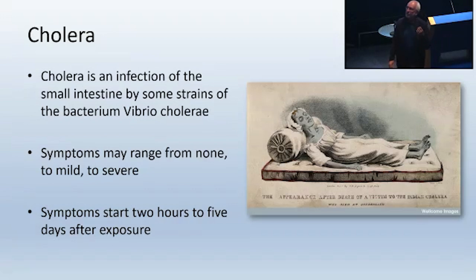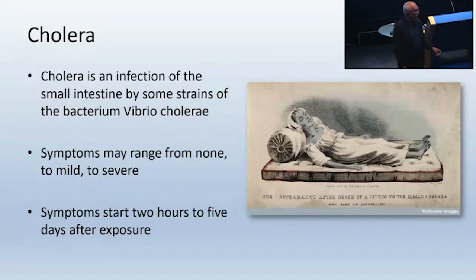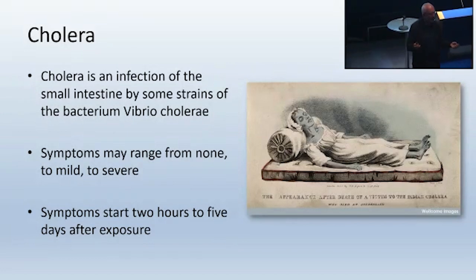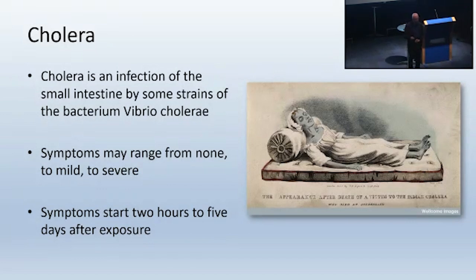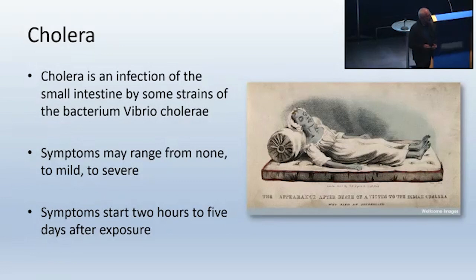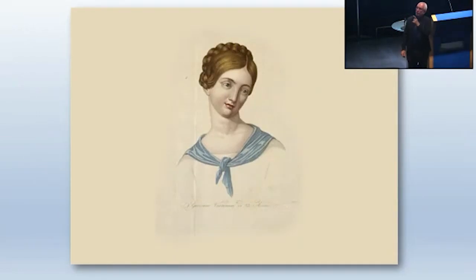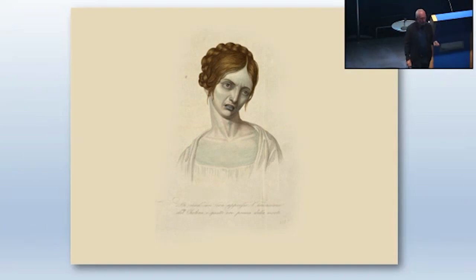Cholera is an infection of the small intestine, caused by the bacteria Vibrio cholerae — known as the blue death. Symptoms can range from none to mild to very severe, and by severe I mean people die. Symptoms can start within two hours to five days after exposure. It's quite an unusual bacteria because it has this knack of multiplying rapidly: within a couple of hours of ingesting just a few cholera bacteria you suddenly have several million. Diseases like syphilis do the opposite — they stay very low key — but with cholera it just triggers an immune response immediately.